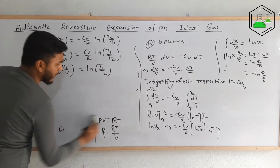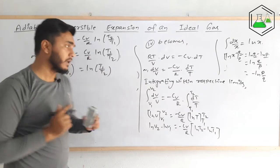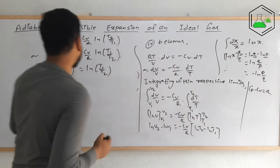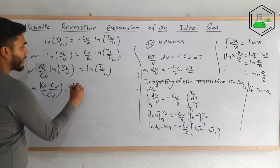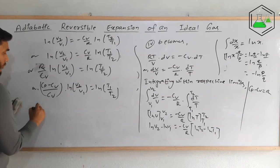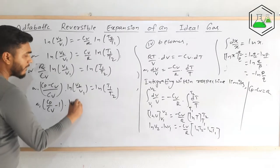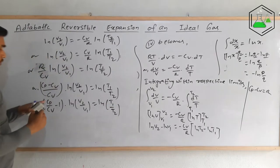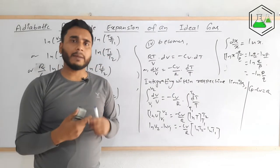We know the relation cp − cv = R, so in place of R we can write (cp − cv). Dividing through by cv gives (cp/cv − 1) ln(V2/V1) = ln(T1/T2). We see that cp/cv is the ratio of molar heat capacity at constant pressure to that at constant volume.